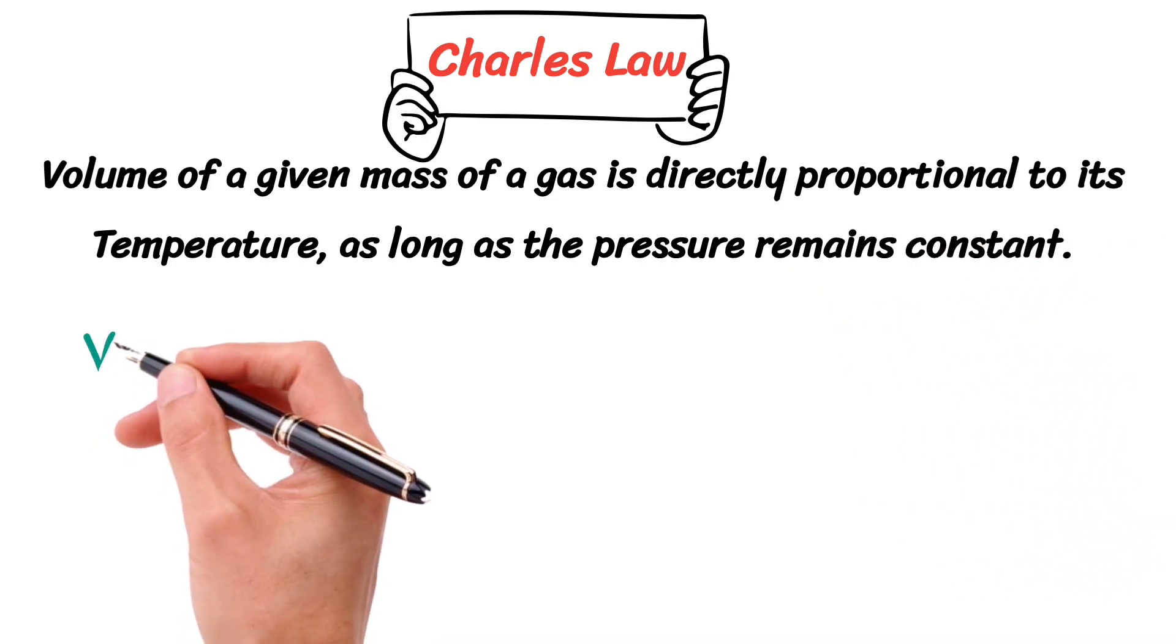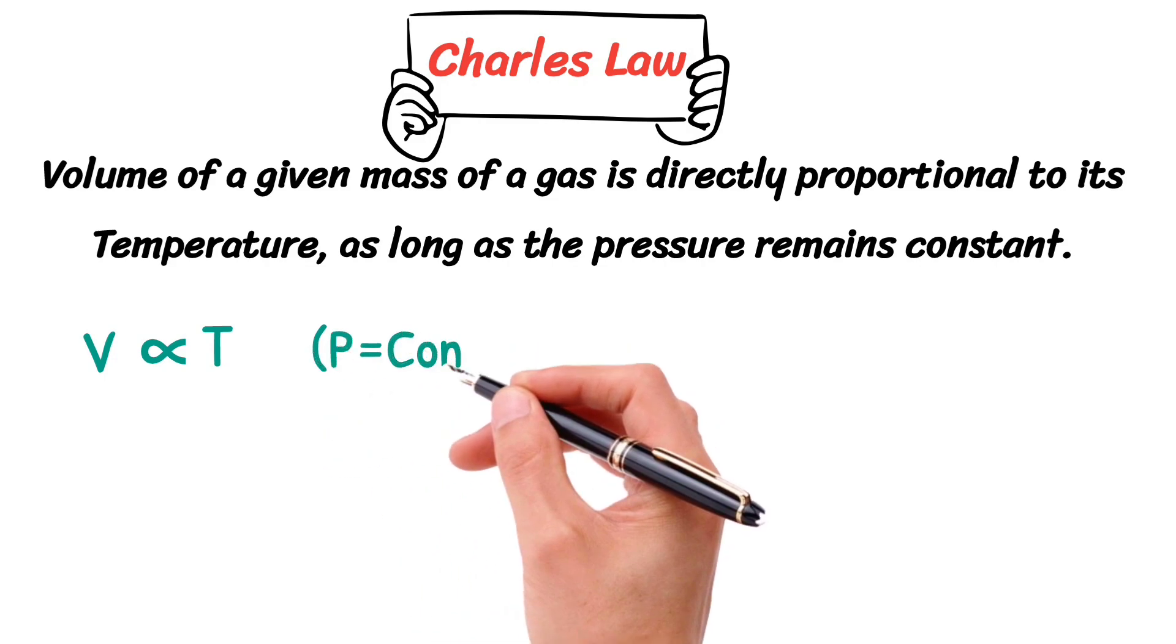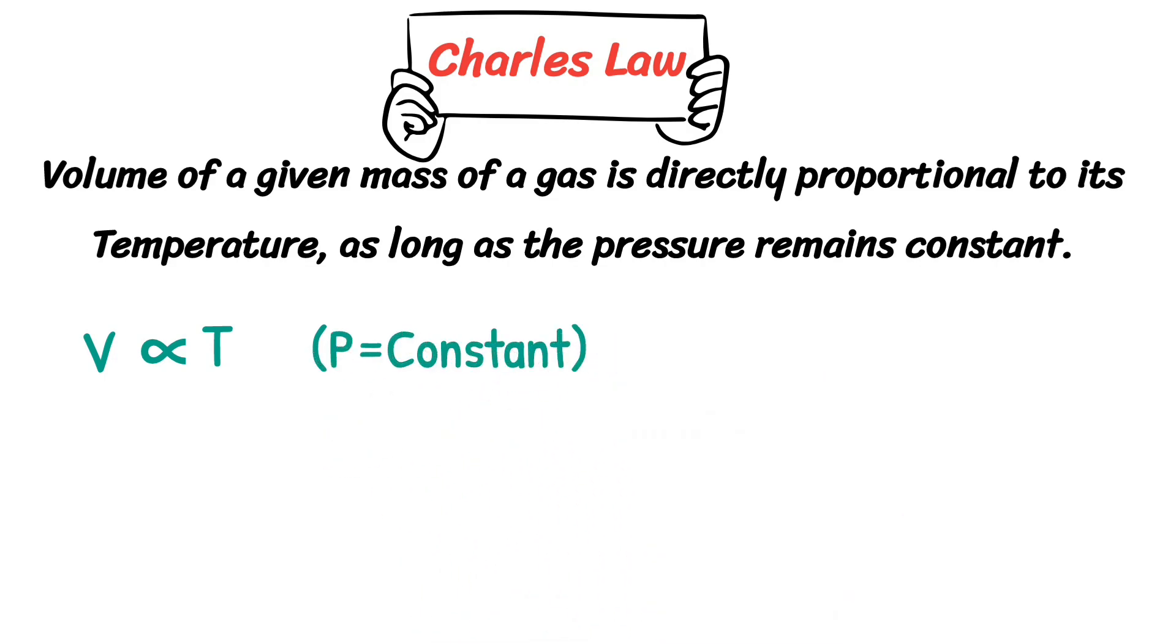Mathematically, it can be written as V is directly proportional to T, while pressure P becomes constant. To change the proportionality sign into an equal sign, we need to add a constant, which we'll call K. This equation can also be written as V over T equals K. K is a proportionality constant.